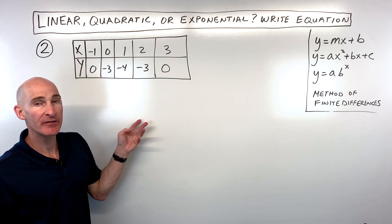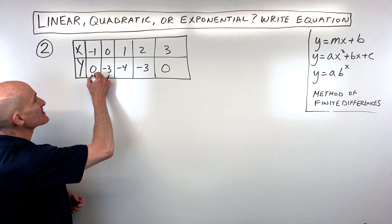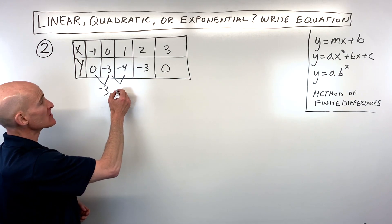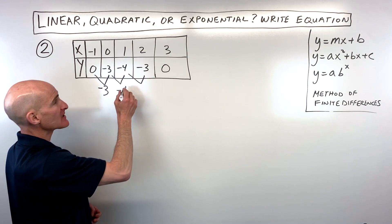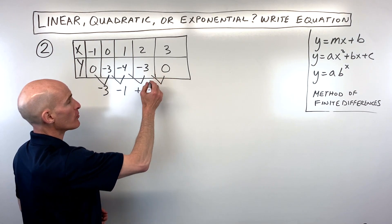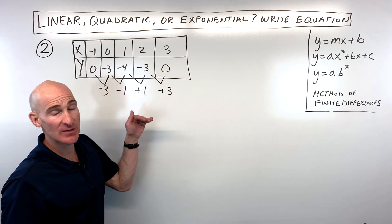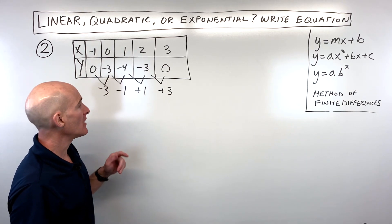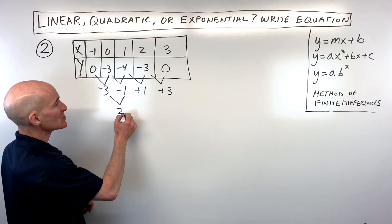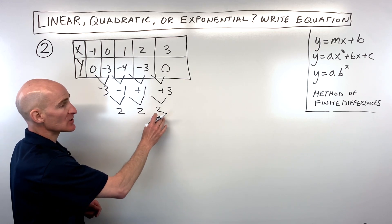For example number 2, let's use the method of finite differences. Doing right minus left: negative 3 minus 0 is negative 3, negative 4 minus negative 3 is negative 1, negative 3 minus negative 4 is positive 1, and 0 minus negative 3 is positive 3. We're not getting the same number the first time, so it's not a first degree equation. Subtracting again: negative 1 minus negative 3 is 2, 1 minus negative 1 is 2, and 3 minus 1 is 2. We get 2, 2, 2.